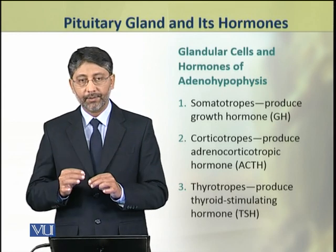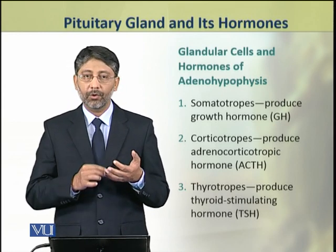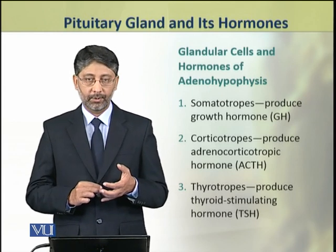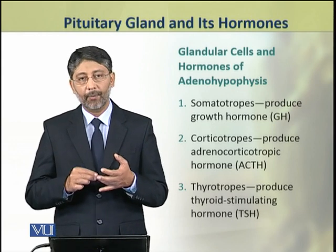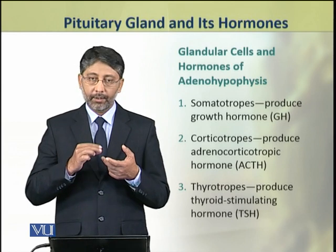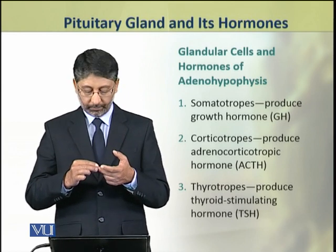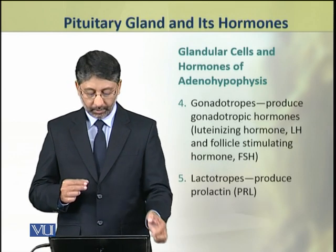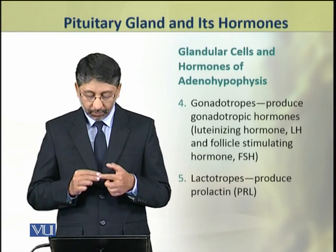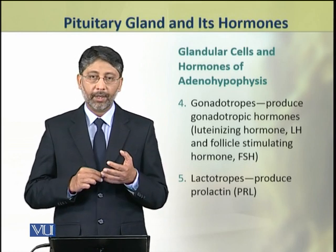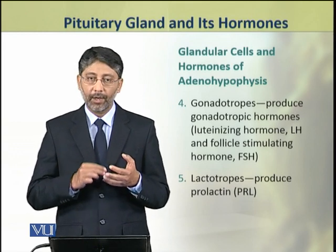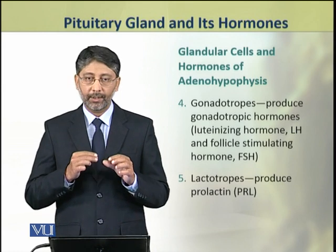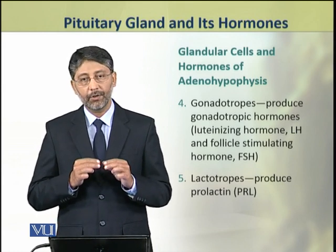These five types of cells include: number one, the somatotropes which produce growth hormone; number two, corticotropes which produce adrenocorticotropic hormone ACTH; number three, the thyrotropes which produce thyroid stimulating hormone TSH; number four, the gonadotropes which produce gonadotropic hormones — luteinizing hormone LH and follicle stimulating hormone FSH; and number five, the lactotropes which produce prolactin.